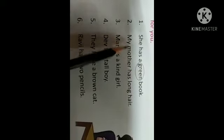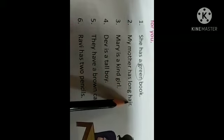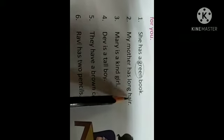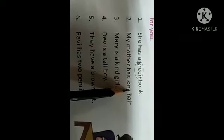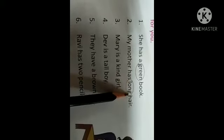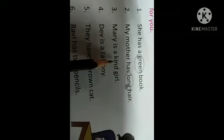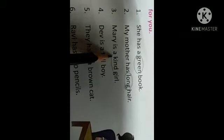Next one is, my mother has long hair. So, describing about hair. What is this word? Long. So, adjective is long. We are circling this one. Third one is, Mary is a kind girl. Girl is a noun. Before noun, we have adjective which is describing the noun. Kind.